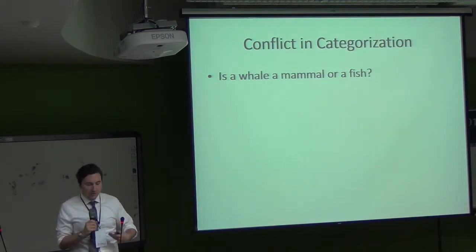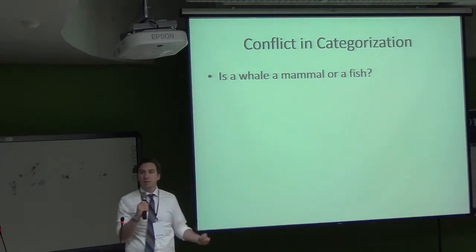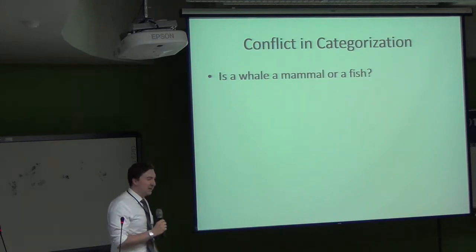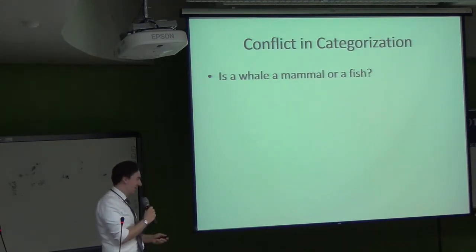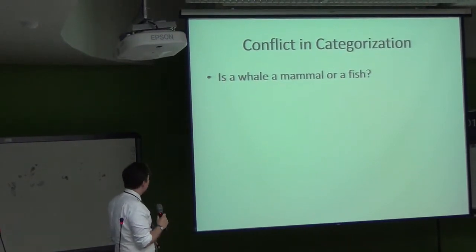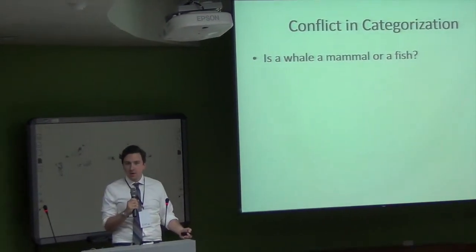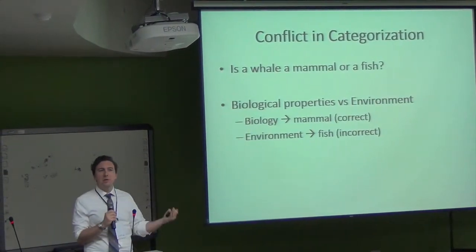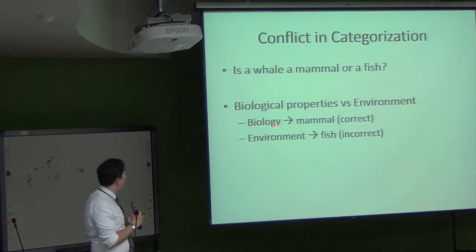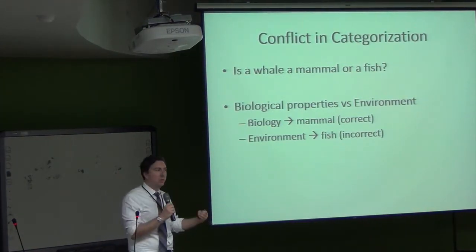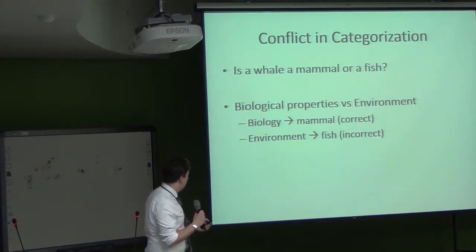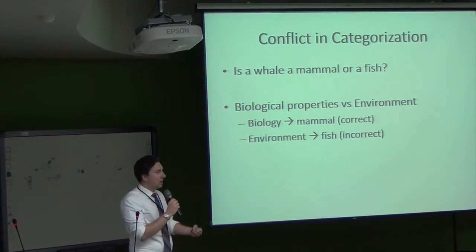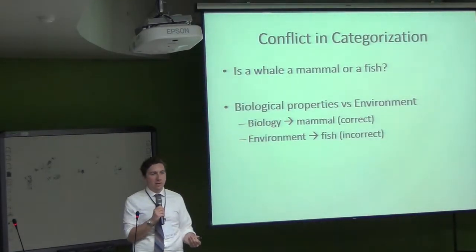A simple example would be a categorization question: is a whale a mammal or a fish? There are a lot of different attributes you could call to mind to categorize a whale. The two most salient properties are probably its biology, which makes it a mammal and points you to the correct answer. On the other hand, its environment makes it similar to fish, which points you to an incorrect answer.